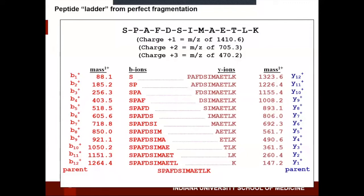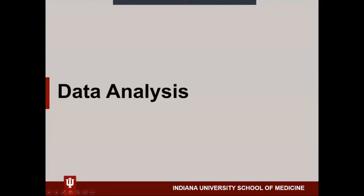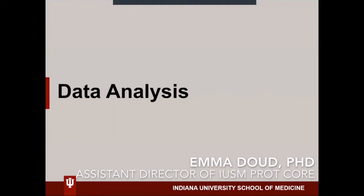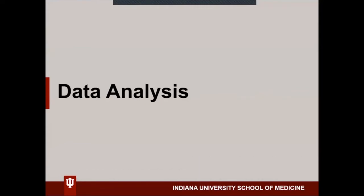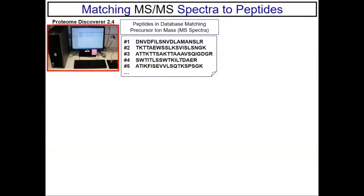So now you have your MS and MS-MS data. What do you do with it? You can imagine that if you're looking at one intact protein, you can spend a lot of individual time looking at it yourself — that can be like a whole paper describing fragmentation. But if you're doing a high-throughput experiment, you need to use software and at least have a vague idea of what your software is doing with your MS and MS-MS data.